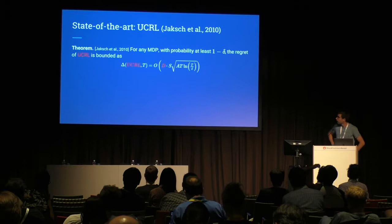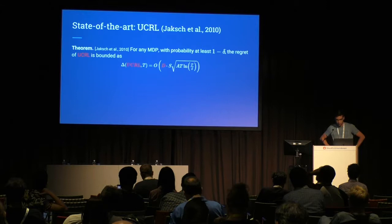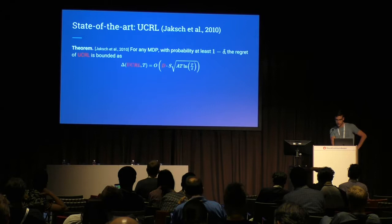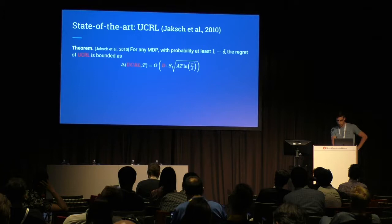A state-of-the-art algorithm in online reinforcement learning is UCRL, which stands for Upper Confidence Bound Reinforcement Learning. This algorithm for a finite MDP achieves the following regret bound. In high probability, after T time steps, you have a regret that scales as D times S square root of AT, where S and A are the dimensions of the state space and action space respectively.